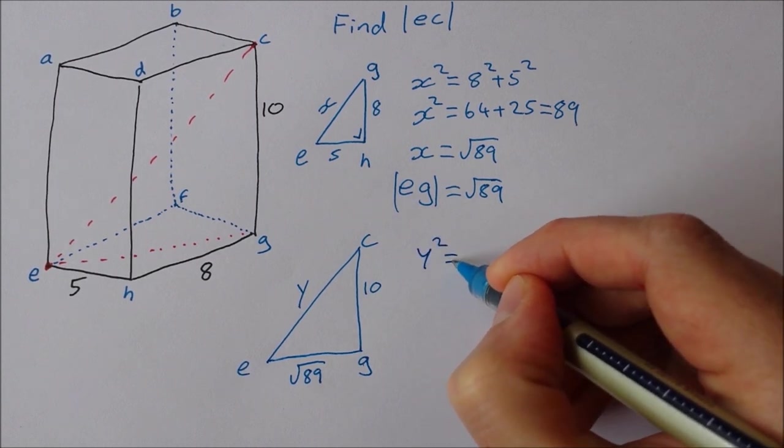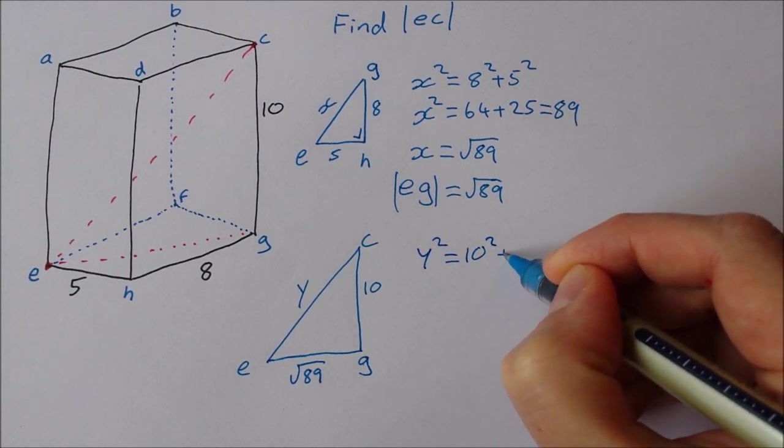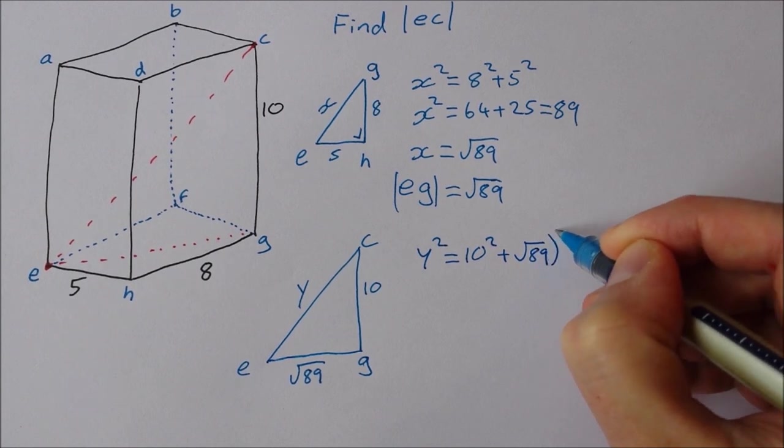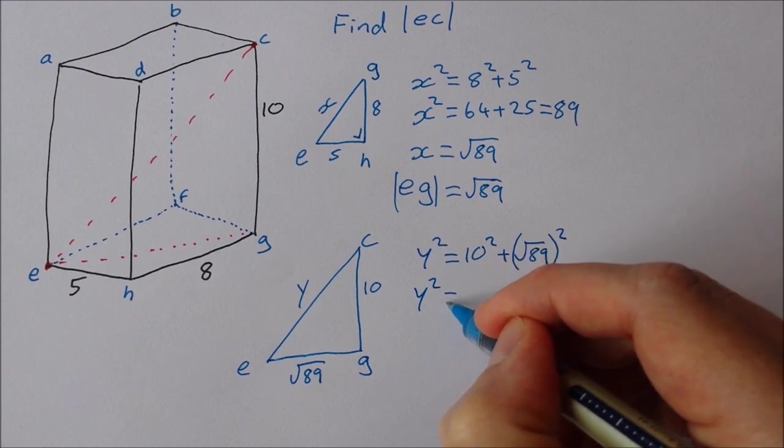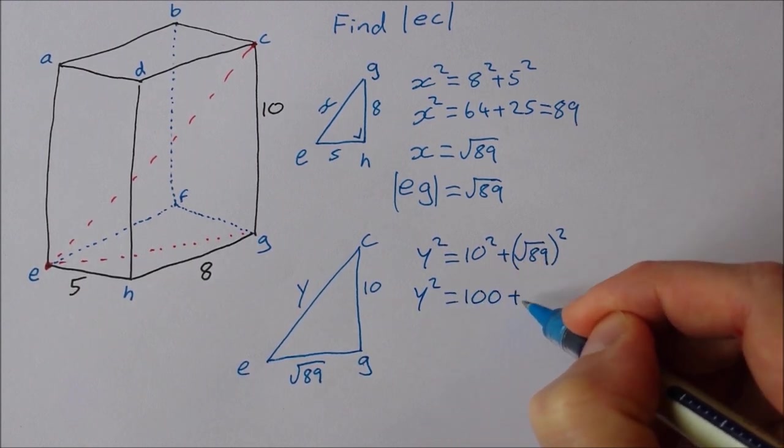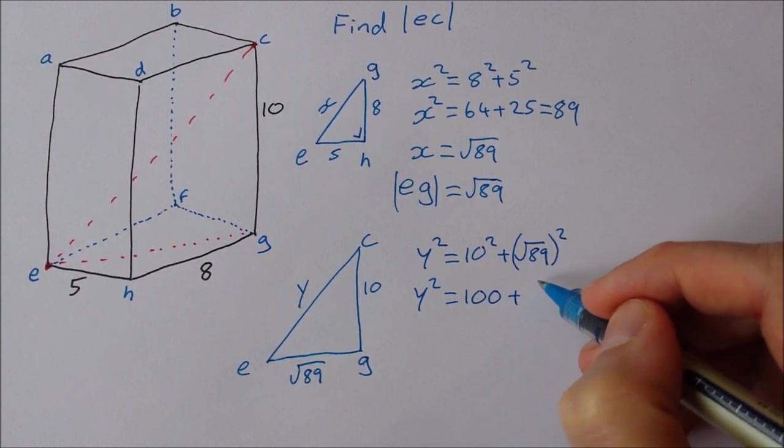Y squared is equal to 10 squared plus root 89 squared. So Y squared is equal to 100. Plus the square root of 89 squared is just 89.